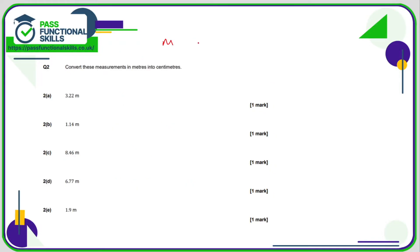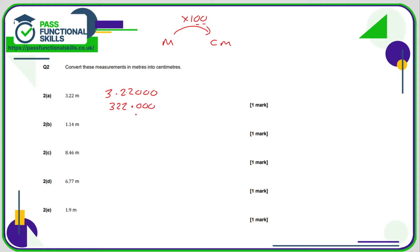Here we're going meters into centimeters, and to go from meters to centimeters we are multiplying by 100. Write the number 3.22 with some zeros on the end. We're moving the decimal point two positions because there are two zeros in 100, and because we're multiplying by 100 we're making this number bigger, so the decimal point moves two positions to the right. The answer is 322.000, and the .000 isn't adding any value, so it's 322 centimeters.